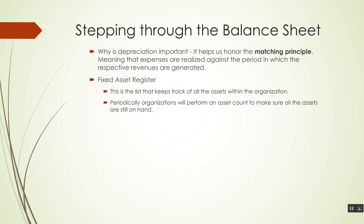The final thing to discuss as it relates to fixed assets is what's called the fixed asset register. Many accounting systems will allow you to maintain your fixed assets in them. Basically, the fixed asset register is a report that details all the assets the organization presently has on hand. The asset register will often have the classification of the asset, its description, and the value of the asset.